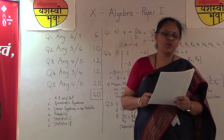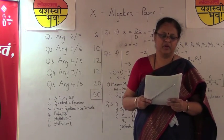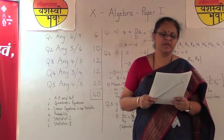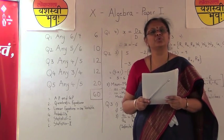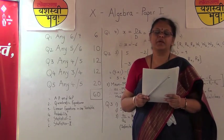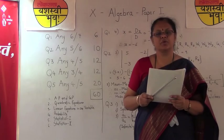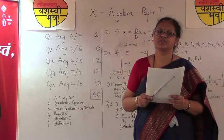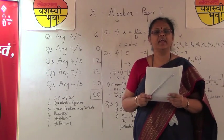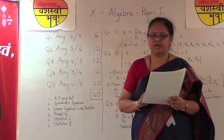Let us go through all the seven questions given in paper one. The first question asked is: write the first term in the arithmetic progression 4, 3, 2, 1. The answer would be simply the first term a is equal to t1 is equal to 4. Just writing a equals t1 equals 4 is going to get you one full mark.